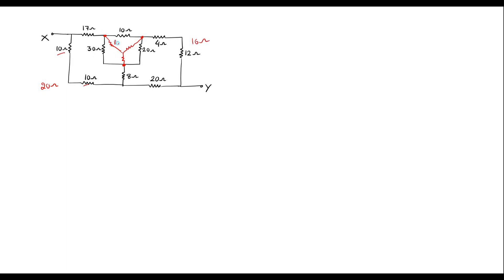I will try to convert these three resistors into star fashion. The equivalent star circuit will look something like this. I will consider it as R1, this as R2, and this as R3. So we can replace the 10 ohm, 20 ohm, and 30 ohm by R1, R2, R3, where R1, R2, R3 are in star connection.